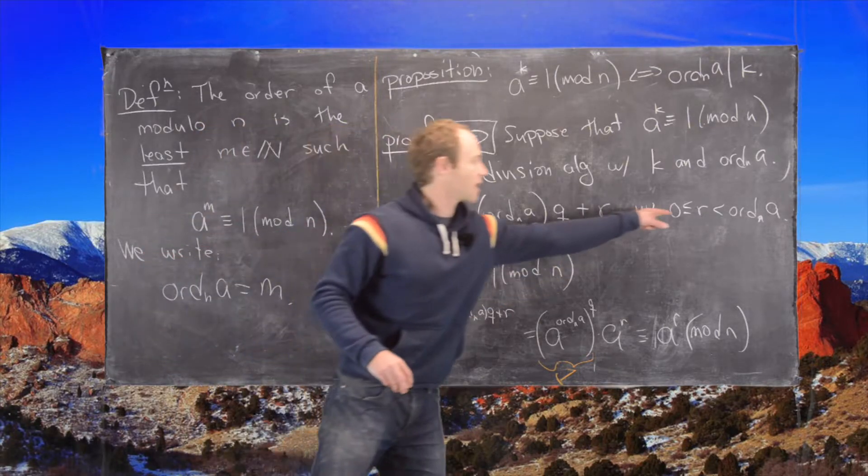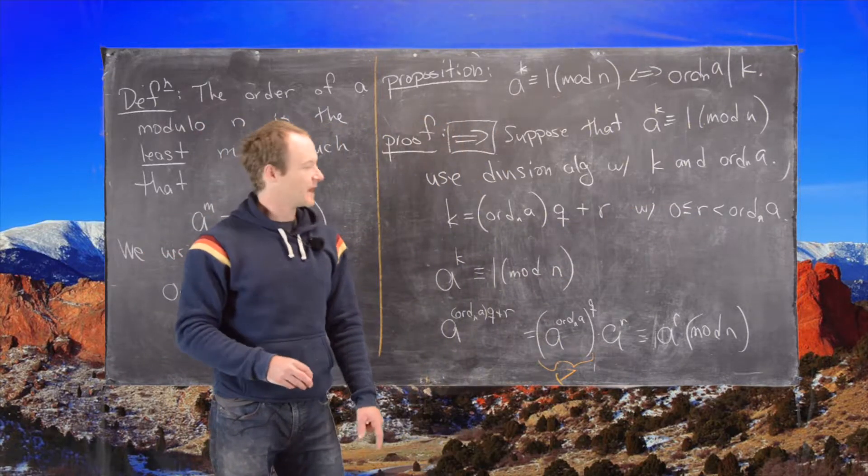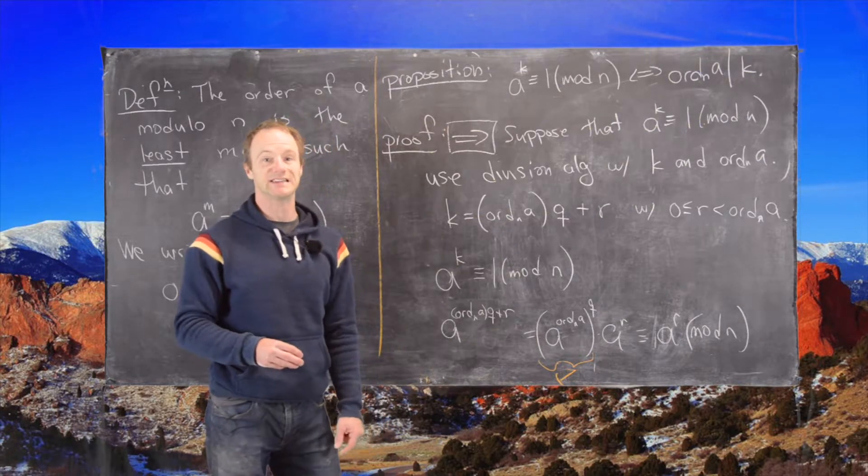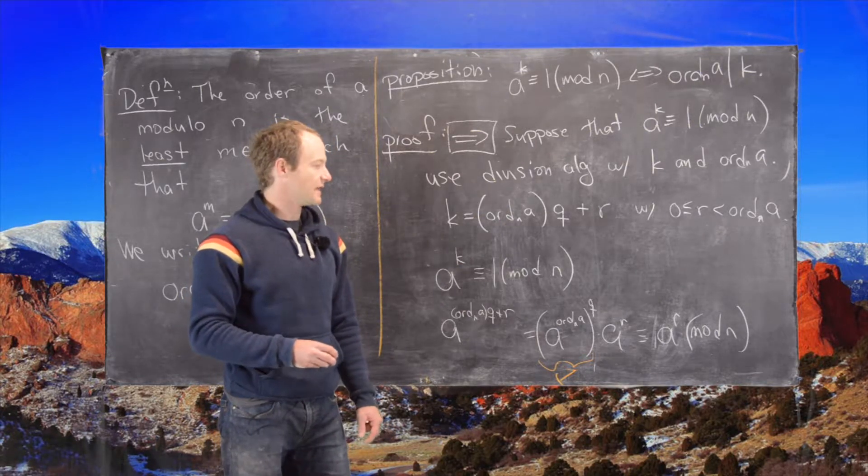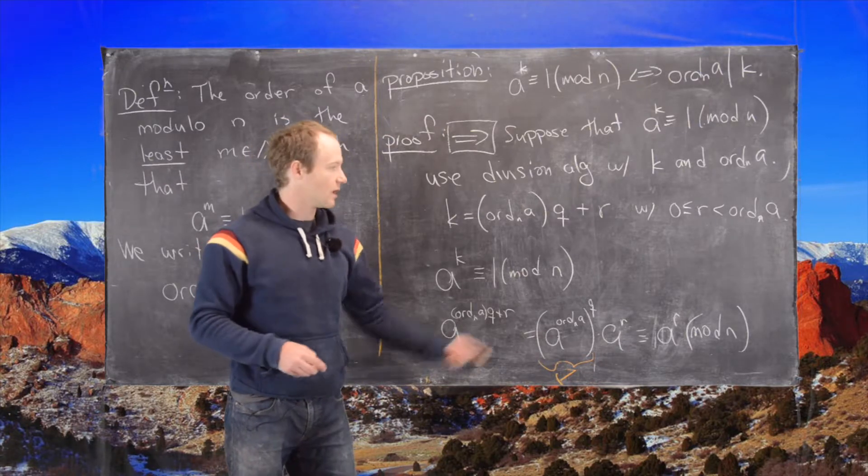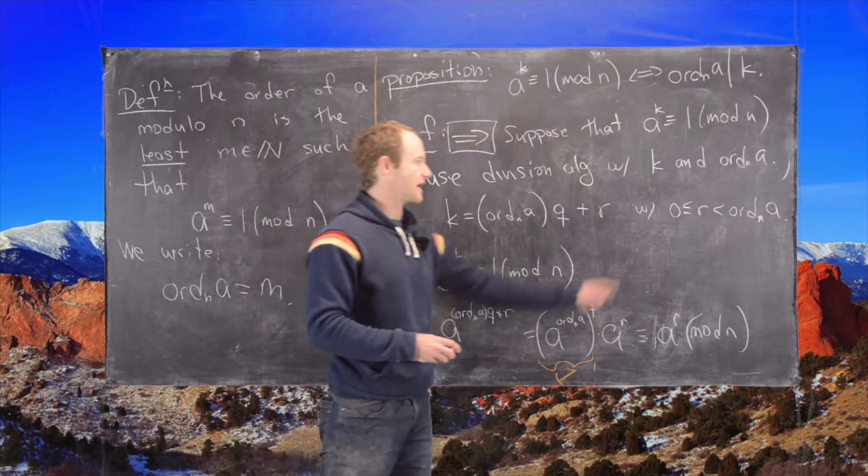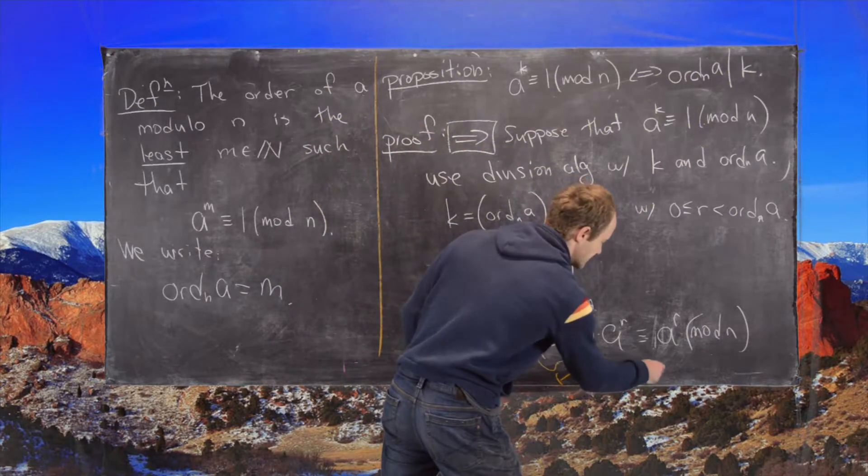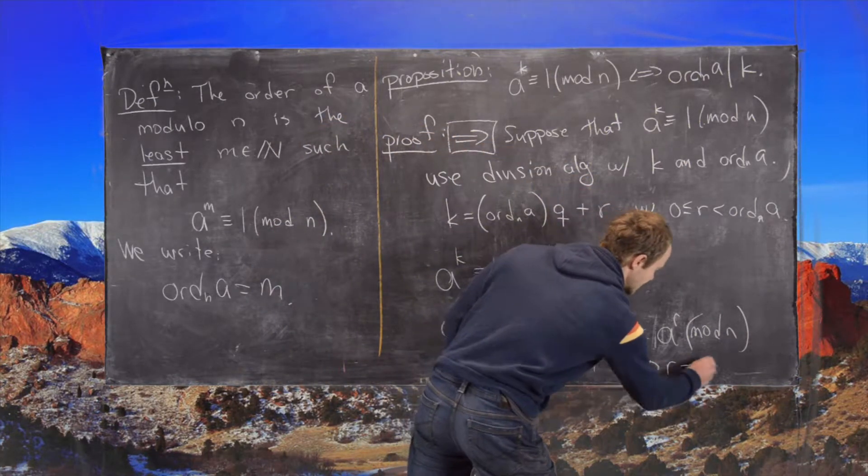But look, r is less than the order. And remember the order is supposed to be the least positive number that has this property. So since r is less than that order, it can't be any of those positive numbers, which tells you that r has to be equal to 0.